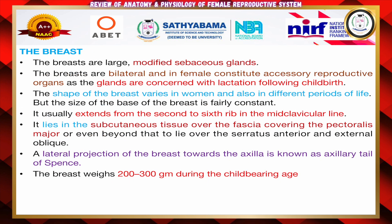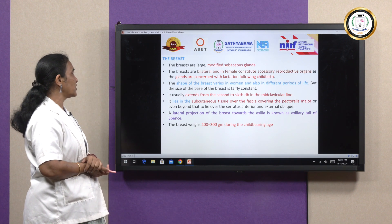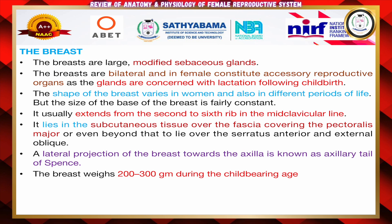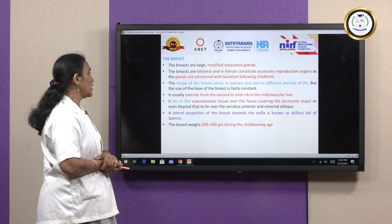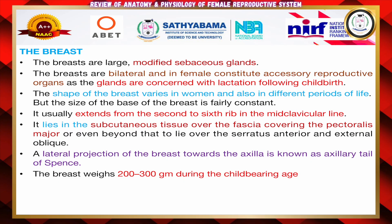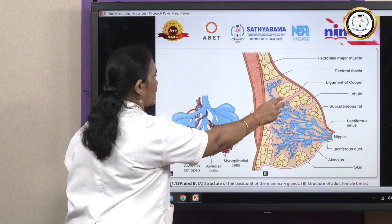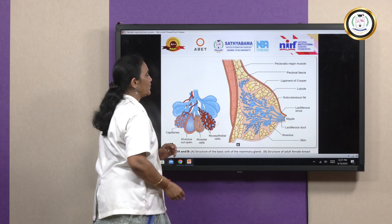The accessory organ is the breast. The breast consists of modified sebaceous glands and is bilateral. In the female it constitutes an accessory reproductive organ, concerned with lactation following childbirth. The shape of the breast varies at different periods of life and extends from the second to the sixth rib at the mid-clavicular line. It lies in the subcutaneous tissue and fascia covering the pectoralis muscles and weighs 200 to 300 grams during childbirth. The anatomy includes: pectoralis major, pectoral fascia, ligament of Cooper, lobules, subcutaneous fat, lactiferous sinus, nipple, lactiferous duct, alveoli, and skin.